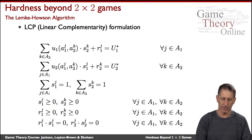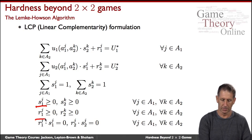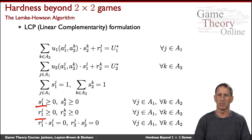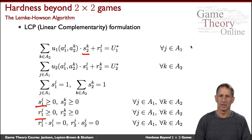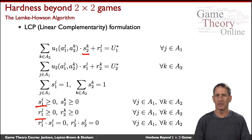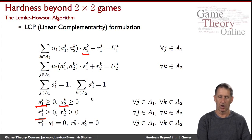At heart are two sets of variables: the S's and the R's. The S's will capture the mixed strategy used by the two players, player one and player two. S2K, for example, would be the weight or the probability with which player two plays action K in their mixed strategy. So the S1s and S2s capture the mixed strategy of the two players.